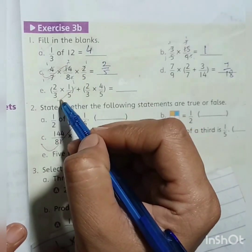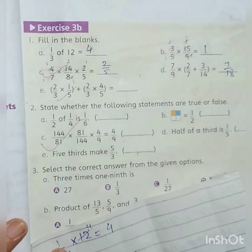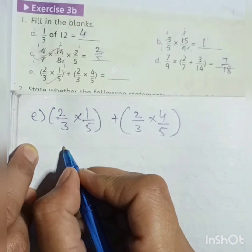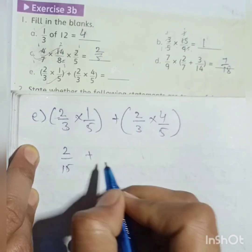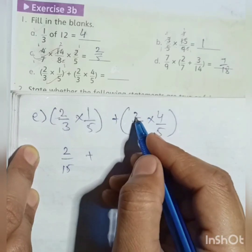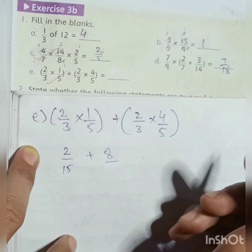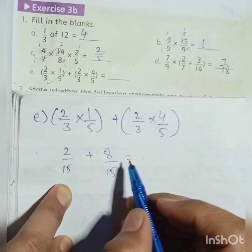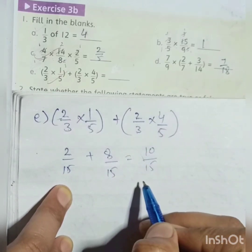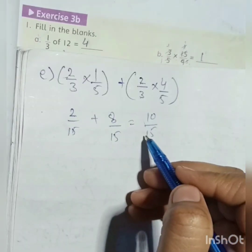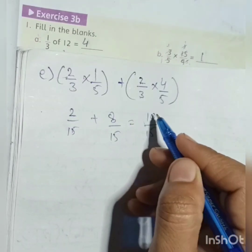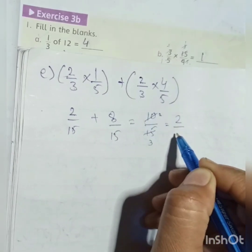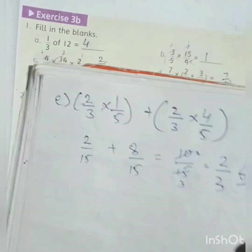Next, we have two fractions multiplied together. There is no cross-cutting during multiplication. So 2/3 × 5/5 gives numerator 2 and denominator 15. Plus another term: 2/4 × 3/5 gives numerator 2 and denominator 15. Since denominators are the same, we add: 2 + 8 = 10. So we have 10/15. Cutting numerator and denominator: 10 gives 2 and 15 gives 3. Our answer is 2/3.